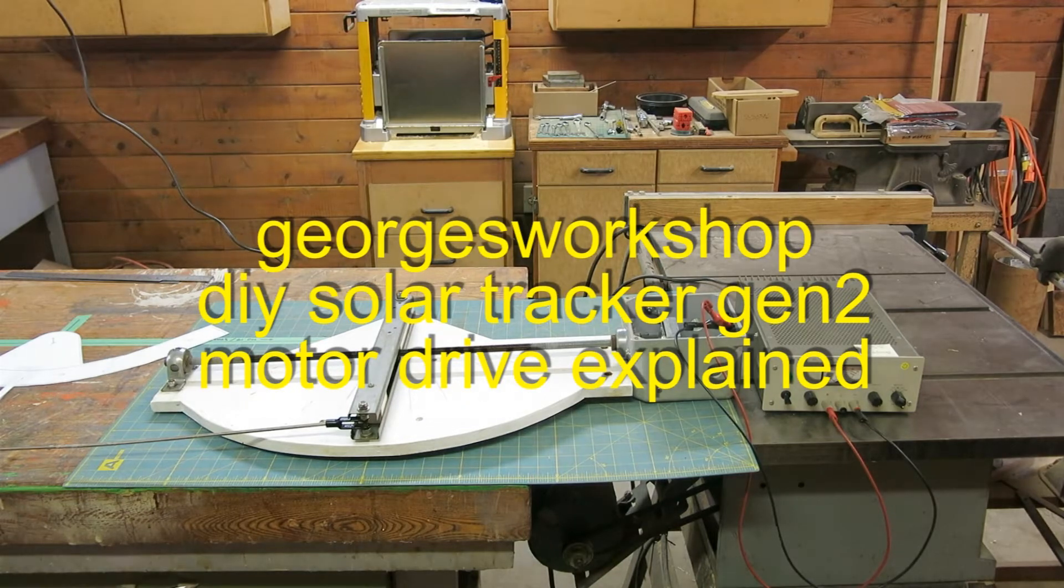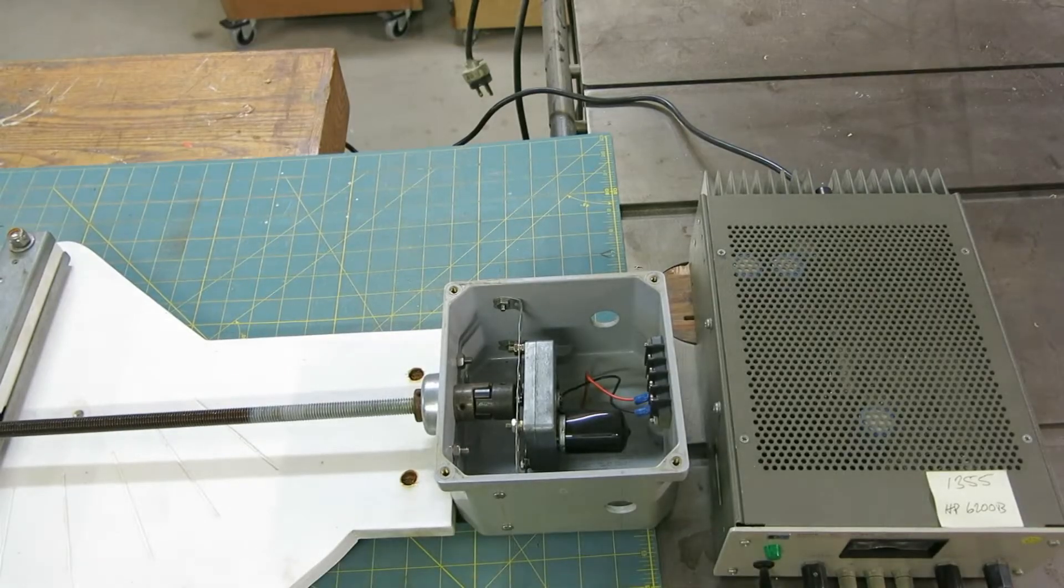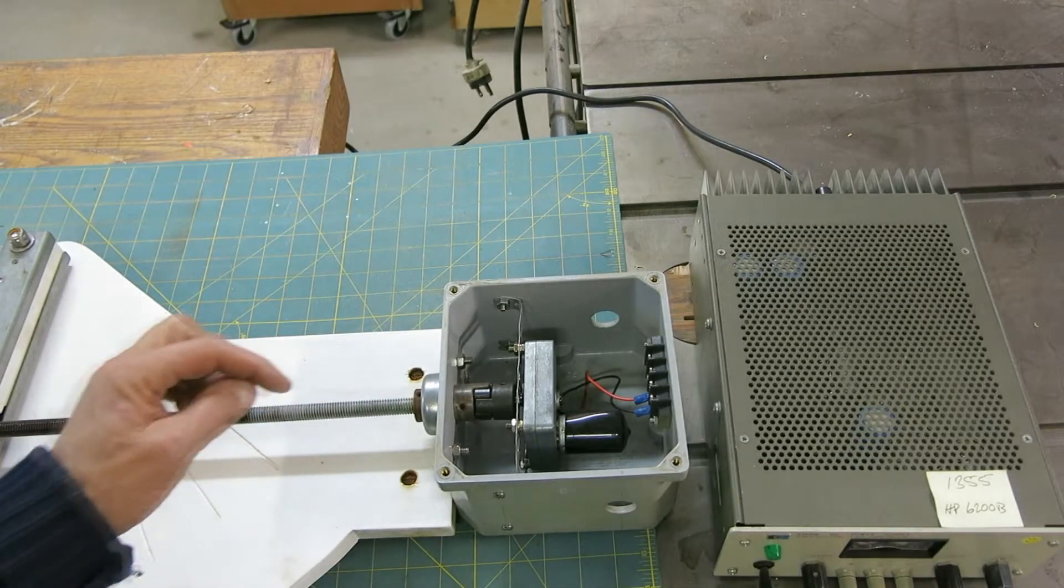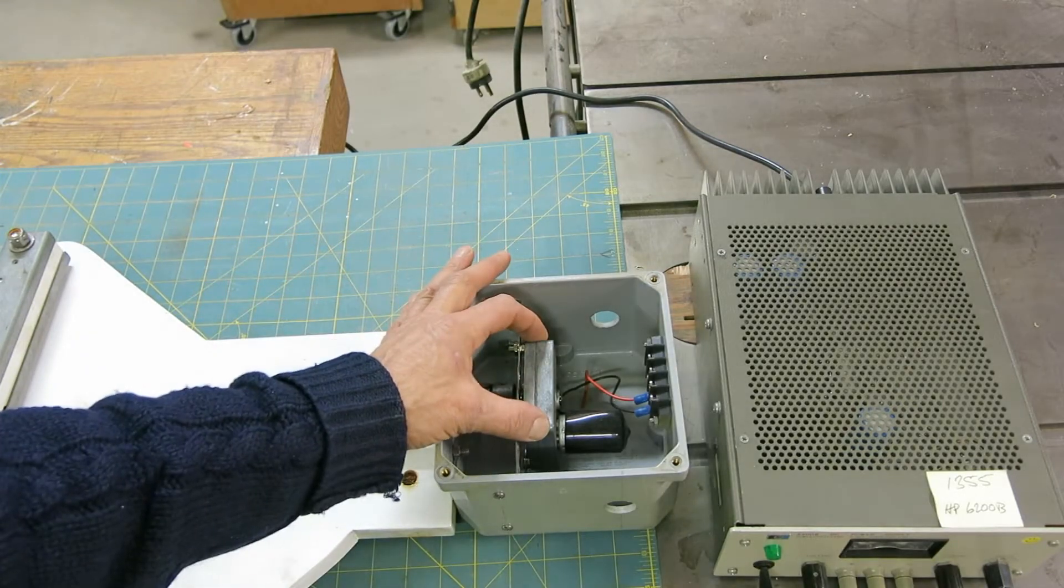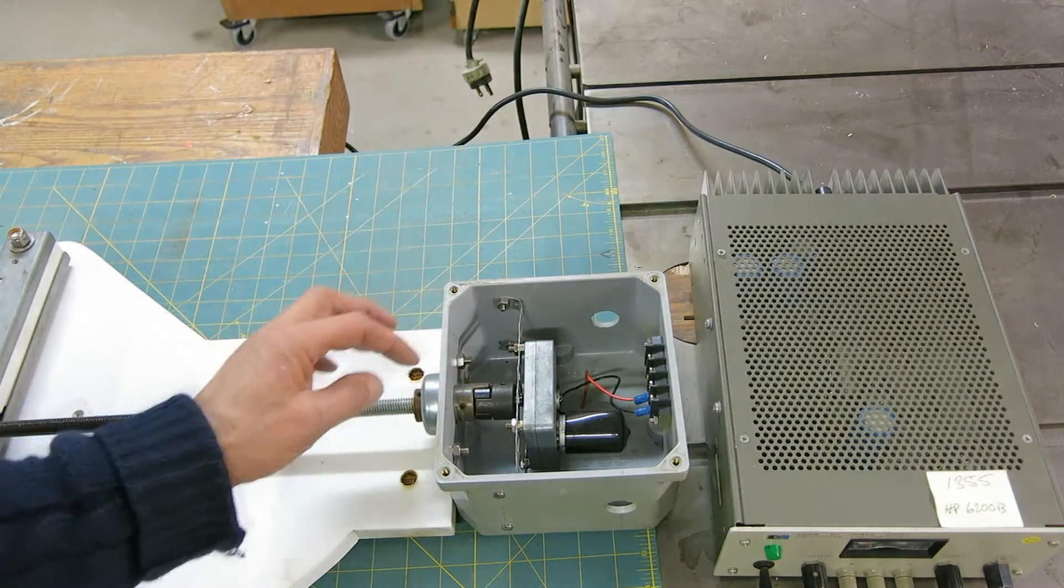This morning I'm going to show you the motor drive of the solar tracking parabolic collector. I'll start here in the motor box and you can see we have a 12 volt DC gear motor, a terminal strip with a couple of terminals here for the motor.